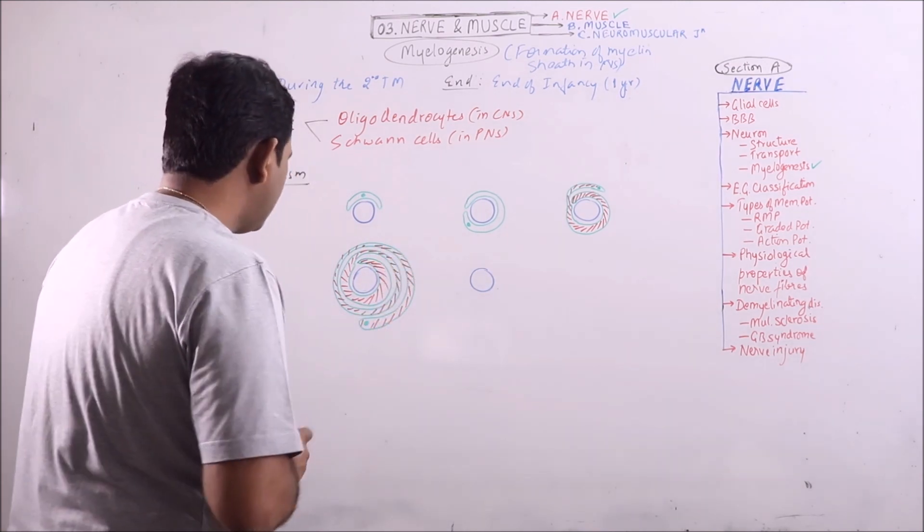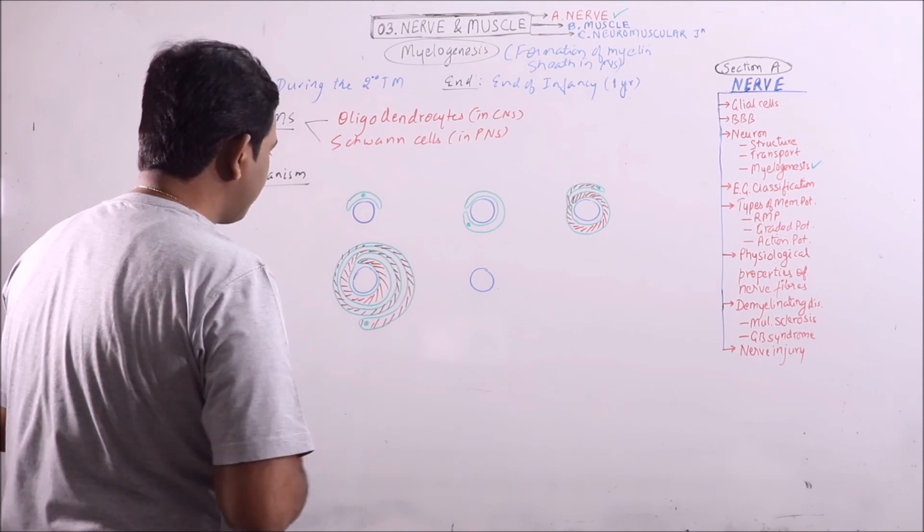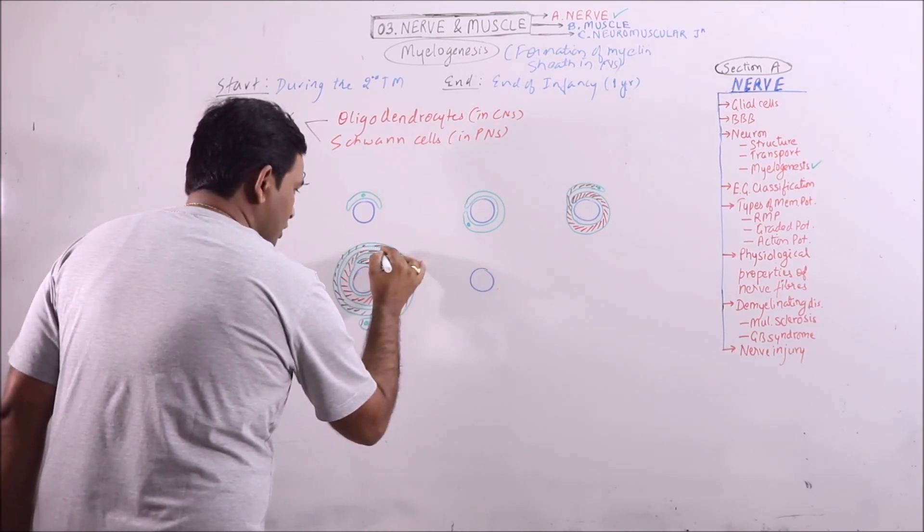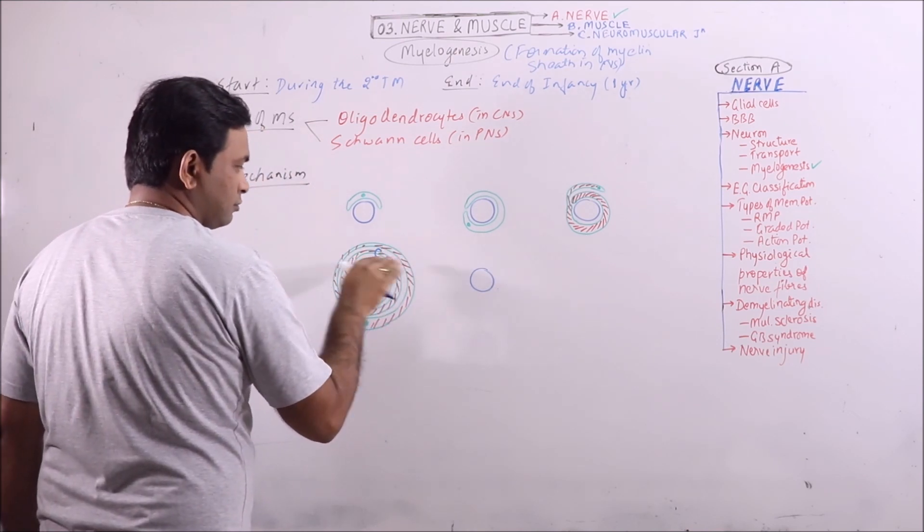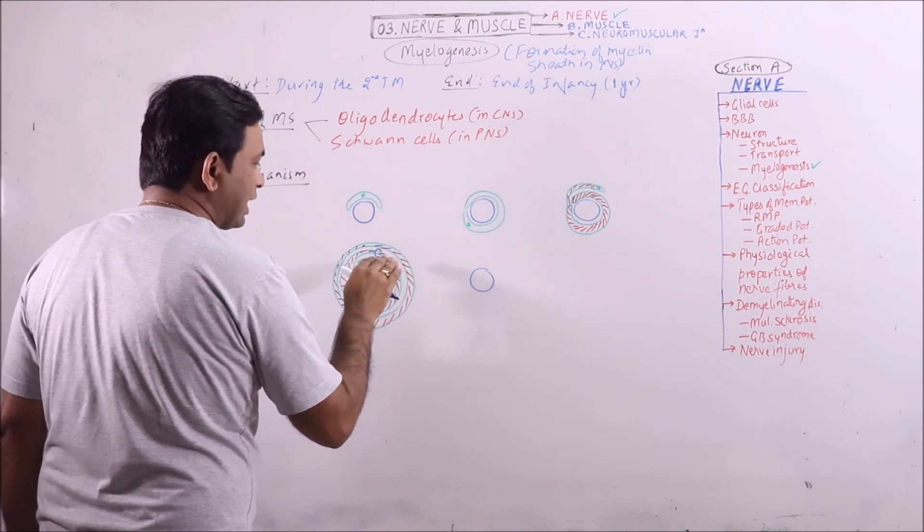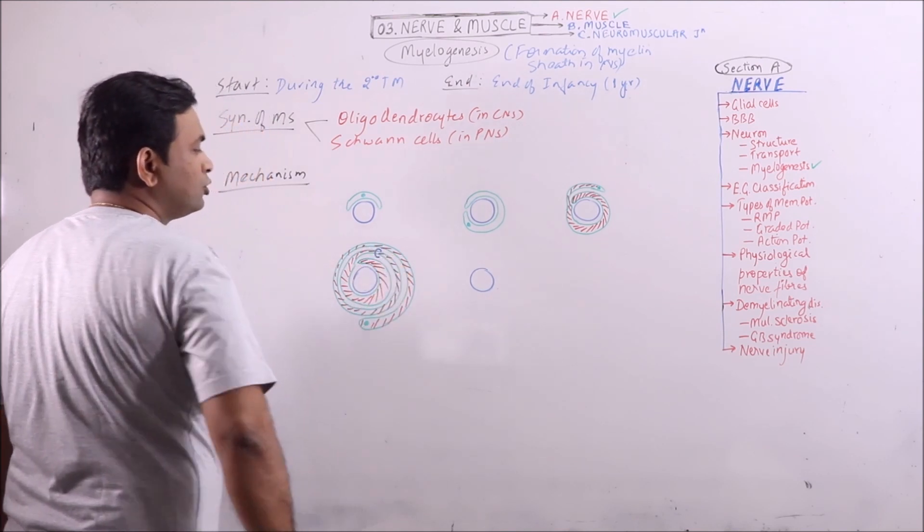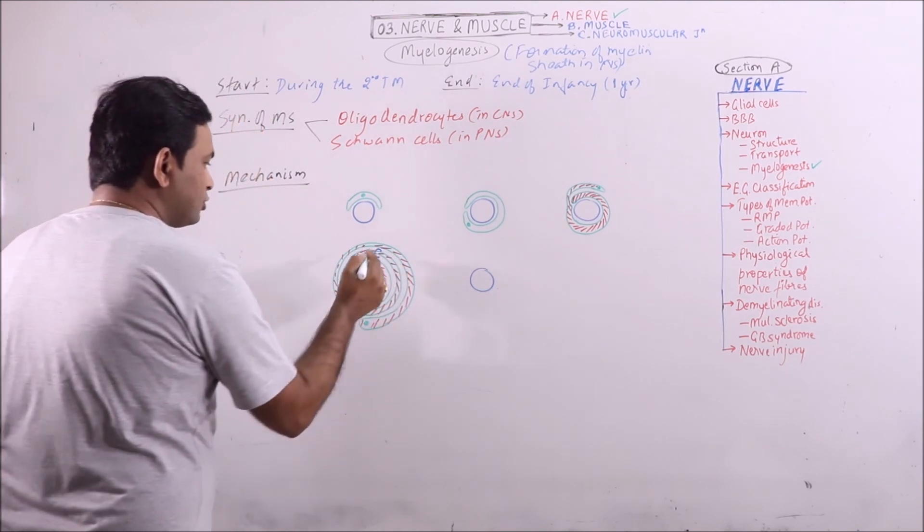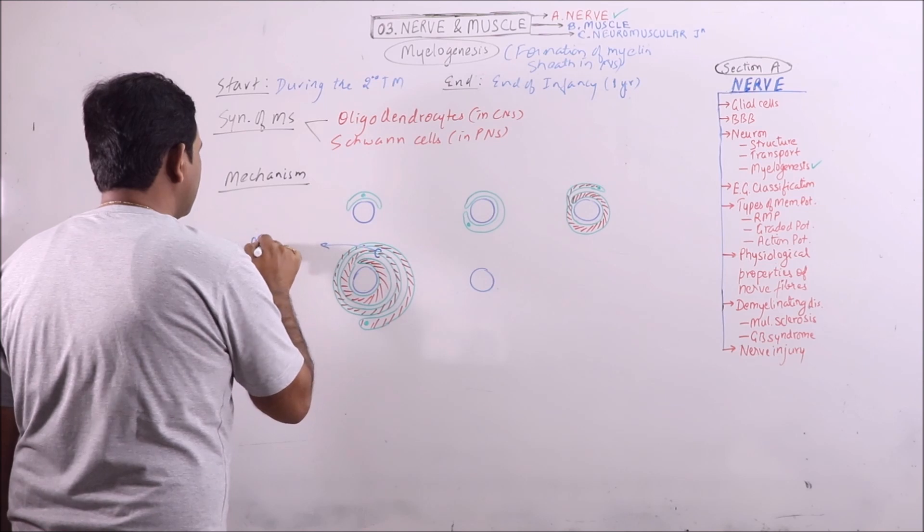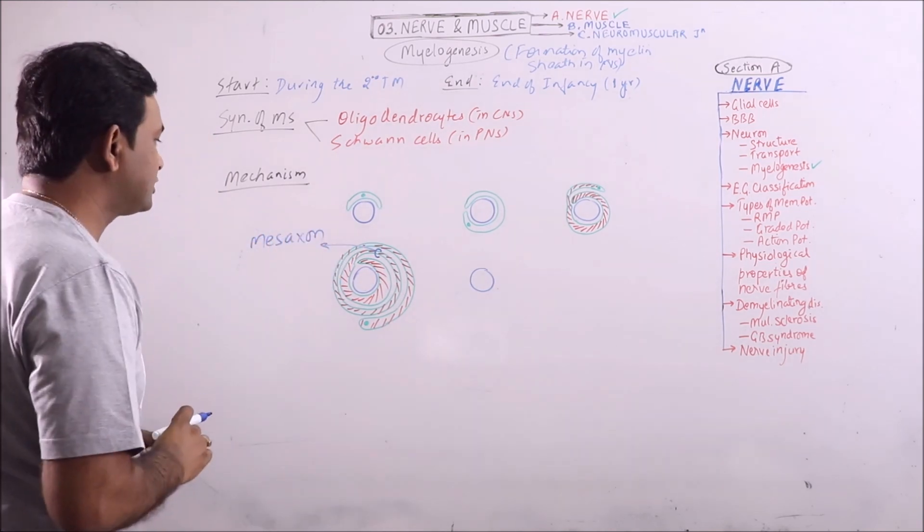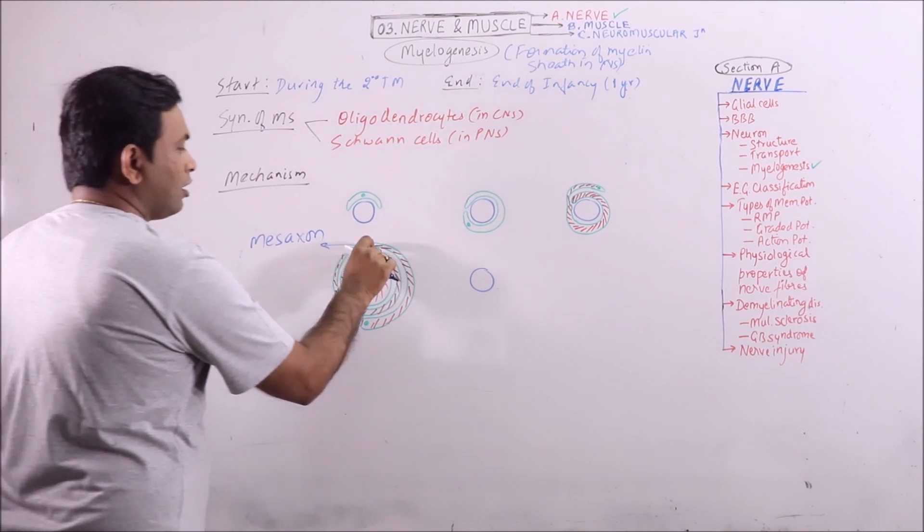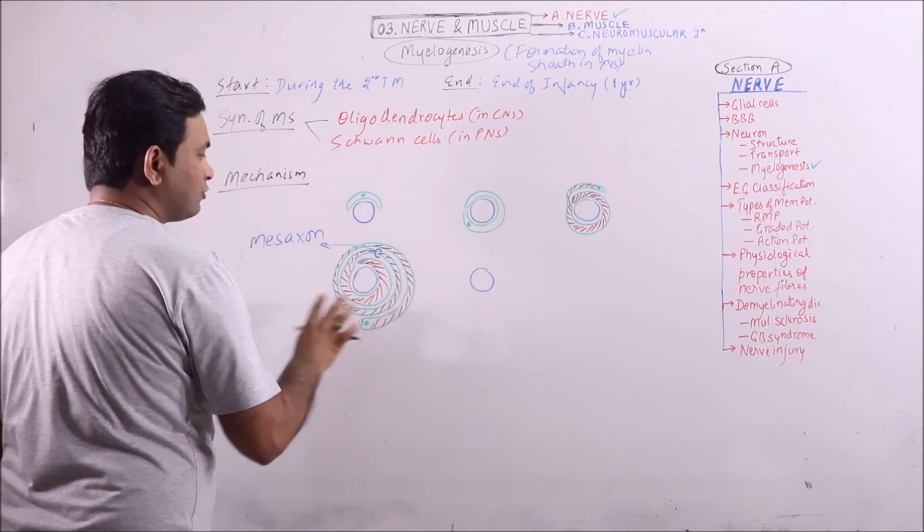Now during the process of wrapping, if we can observe, this is a parallel pair. It is a pair of parallel plasma membrane of Schwann cell. This is known as mesaxome. So what is mesaxome? It is the pair of parallel plasma membrane of Schwann cell.